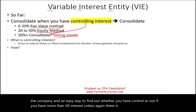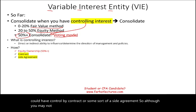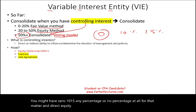How do we have control? Equity interest more than 50%. However, sometimes you could have control by contract or some sort of a side agreement. So although you may not have 50% plus — you might have 0%, 10%, 15%, any percentage, or no percentage at all — you might still have a side agreement or contract that gives you controlling interest.